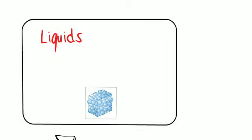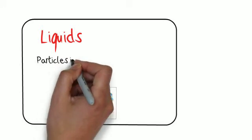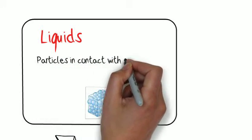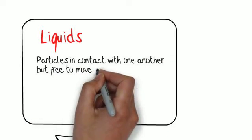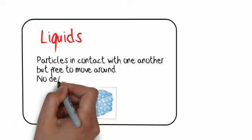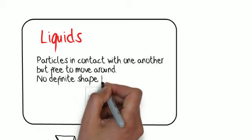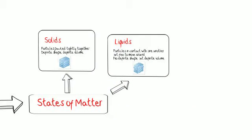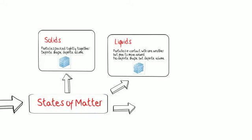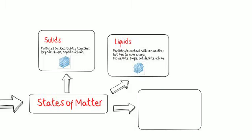After solids, the next state of matter to talk about is liquids. And in liquids, what we have are particles that are in contact with one another, but they're free to move around. And what that means is that there is no definite shape. They take the shape of their container. But there is a definite volume. You can't compress a liquid. You can't take two liters of soda and put it in a one liter bottle.